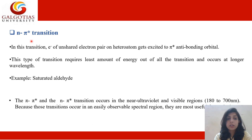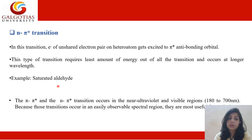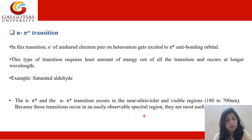The n to pi star transition requires the least amount of energy of all transitions. In this transition, electrons of the unshared pair on the heteroatom — non-bonding electrons — get excited to the pi star antibonding orbital. This occurs at long wavelengths. The pi to pi star and n to pi star transitions occur in the near ultraviolet and visible region, from 180 to 700 nanometers, making them useful for easily observable spectral analysis.